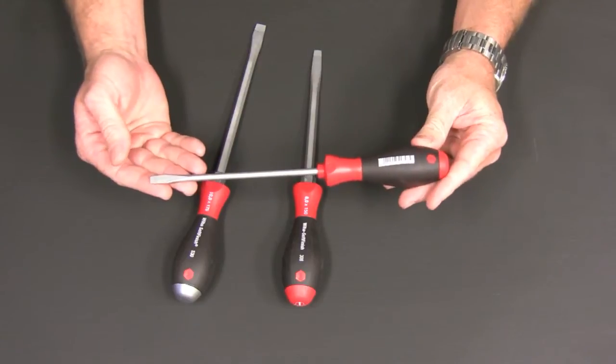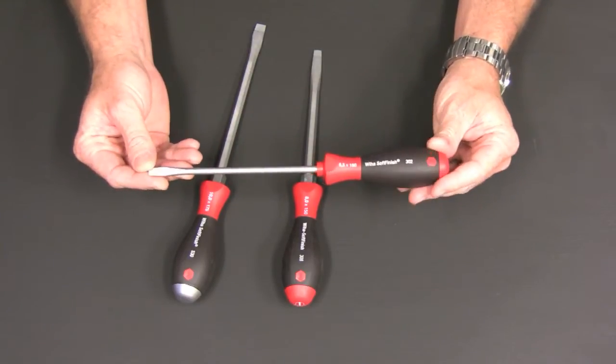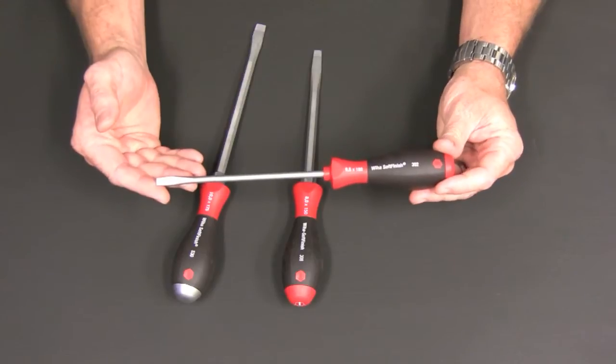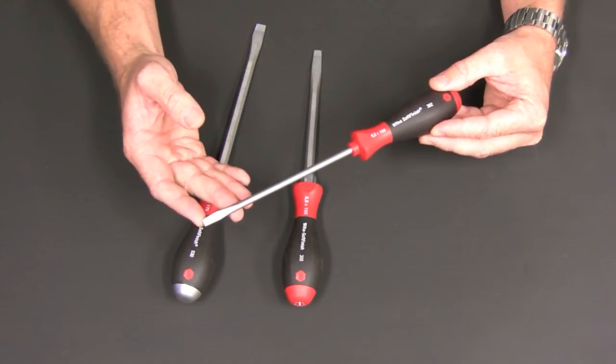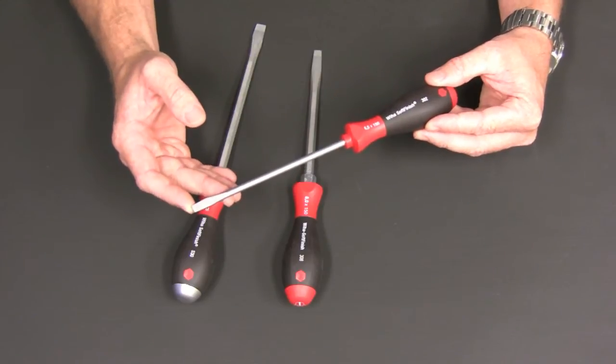The blades are made of Weha's exclusive CVM tool steel, hardened and hard chrome finished for extreme durability. And the tips are precision machined to exact tolerances for a perfect fit every time.